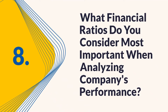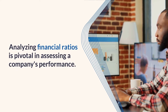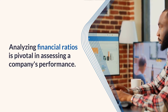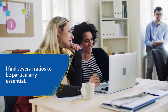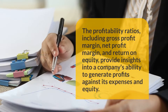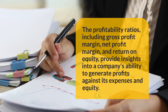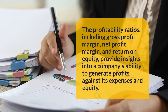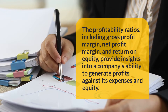Question 8: What financial ratios do you consider most important when analyzing companies' performance? Analyzing financial ratios is pivotal in assessing a company's performance. I find several ratios to be particularly essential. The profitability ratios, including gross profit margin, net profit margin, and return on equity, provide insights into a company's ability to generate profits against its expenses and equity.